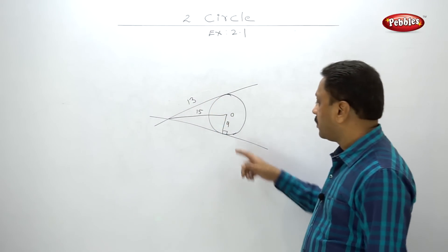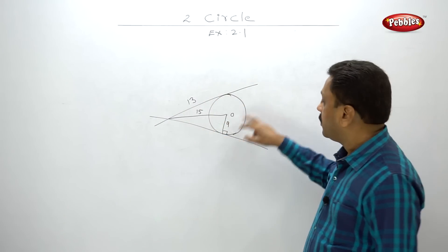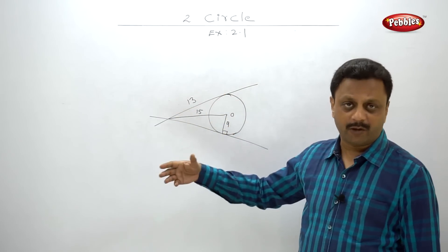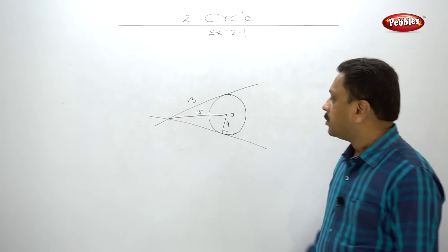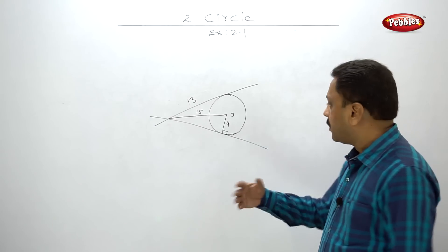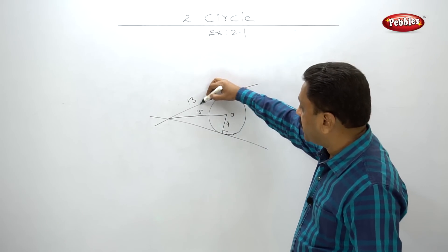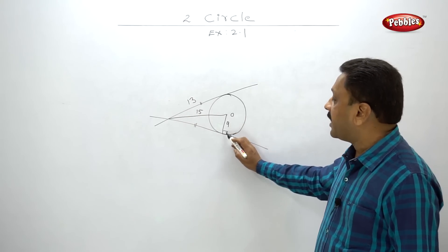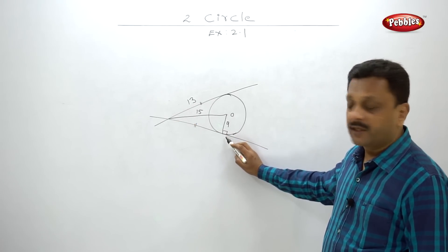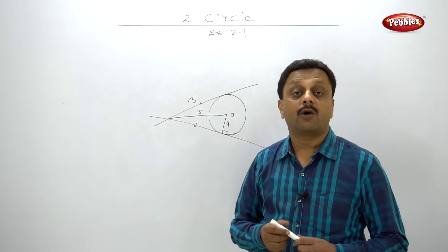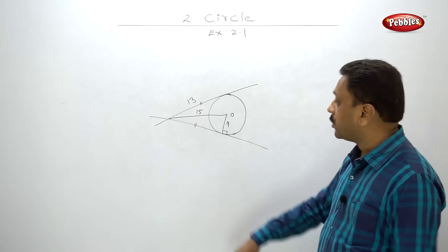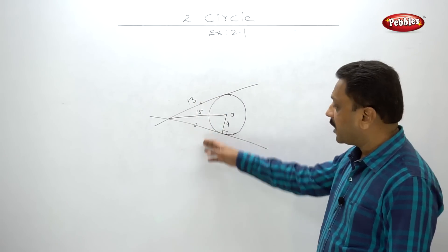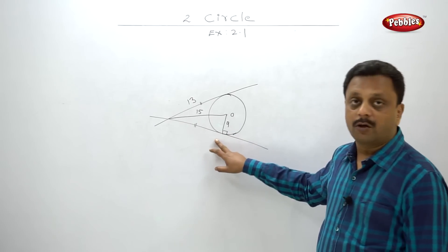In the third figure, two tangent segments to a circle with center O and radius 9 are given, with one side labeled 15 and another labeled 13. By Pythagoras theorem, this side squared equals 15 squared minus 9 squared, which is not equal to 13. But by the theorem, tangent segments from an external point are equal — so that is the error in this figure.